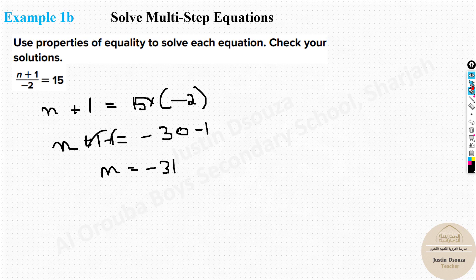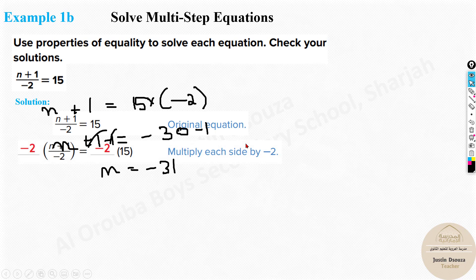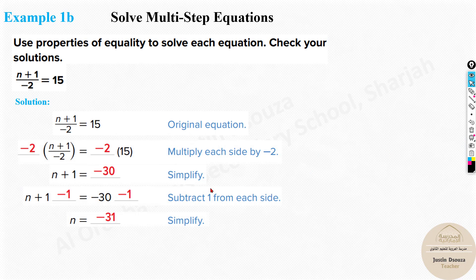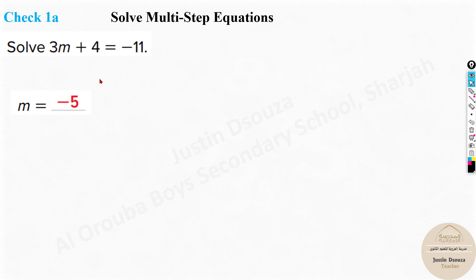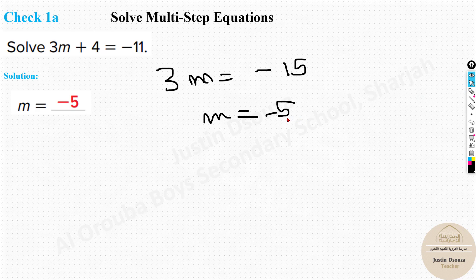This is all there is to multi-step equations. For another example: take 4 to the other side first, giving 3m = -15, because it becomes minus 4. Then m = -15 ÷ 3 = -5. That is the answer for m.